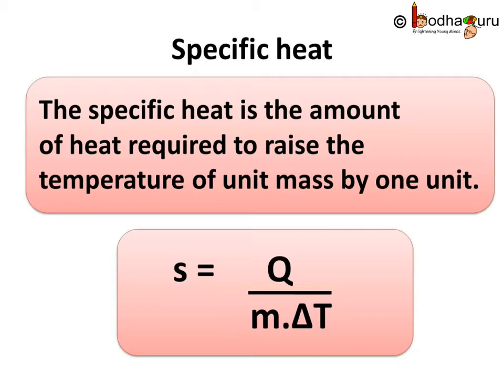If Q is the amount of heat absorbed by the substance, and M is the mass of the substance, and delta T is the change in temperature, then the specific heat denoted by S is equal to Q divided by M multiplied by delta T.